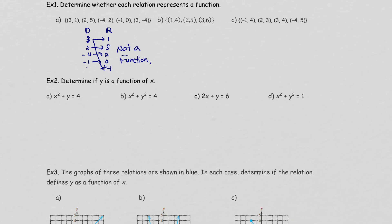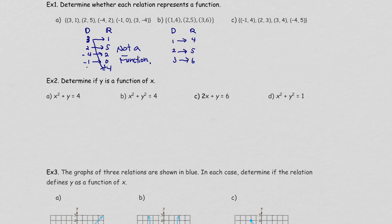You have to have only one range value for each x in order to be a function. Let's look at another example: domain is {1, 2, 3} and range is {4, 5, 6}. 1 corresponds to 4, 2 corresponds to 5, 3 corresponds to 6. One domain for one range in each case — we say yes, this is a function. In fact, we call this a one-to-one function because one domain maps to exactly one range.